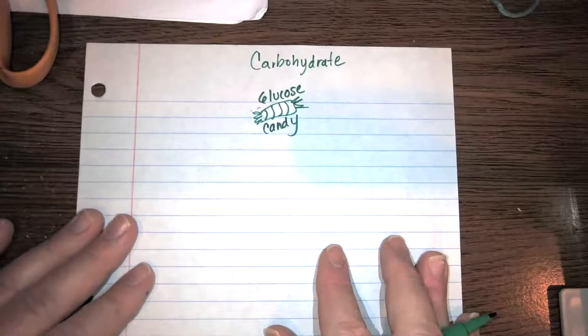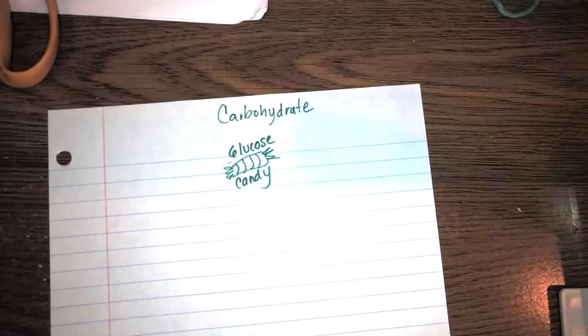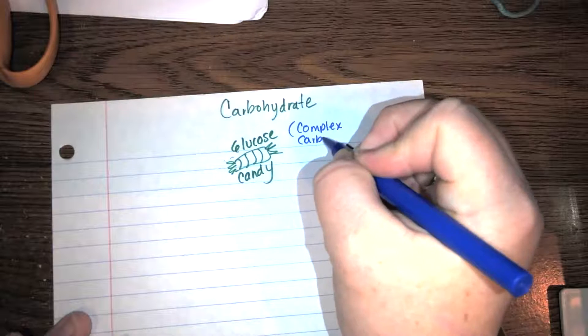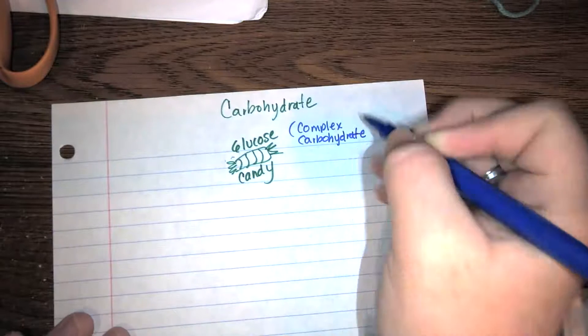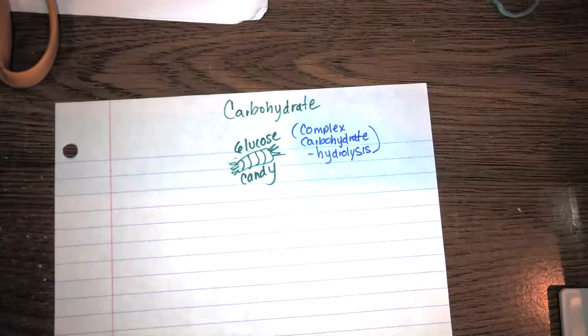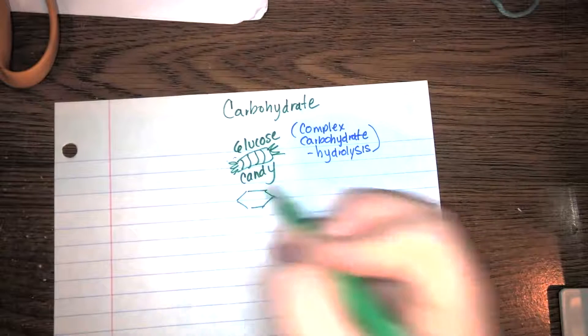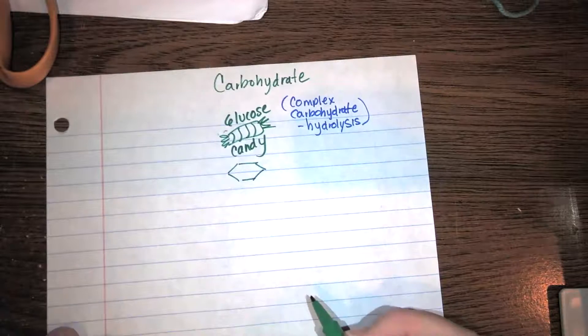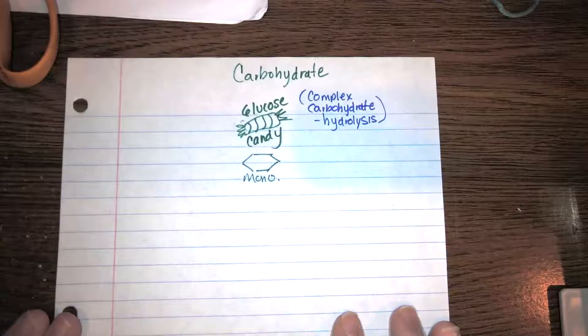Now keep in mind that I'm going to put off here to the side, if this is a complex carbohydrate, meaning a starch or a disaccharide, I'd have to go through hydrolysis to break it down into the individual parts, right? What is one single hexagon? Monosaccharide. Thank you.